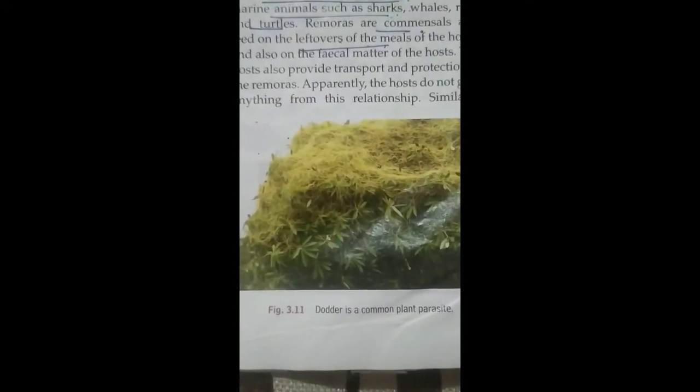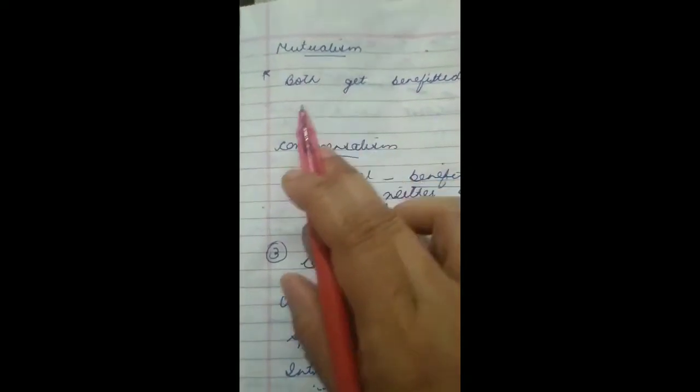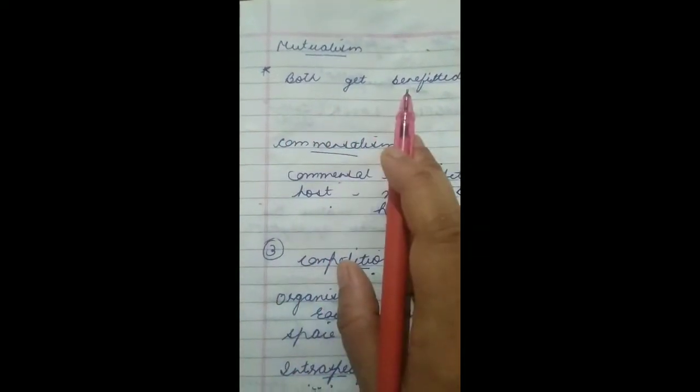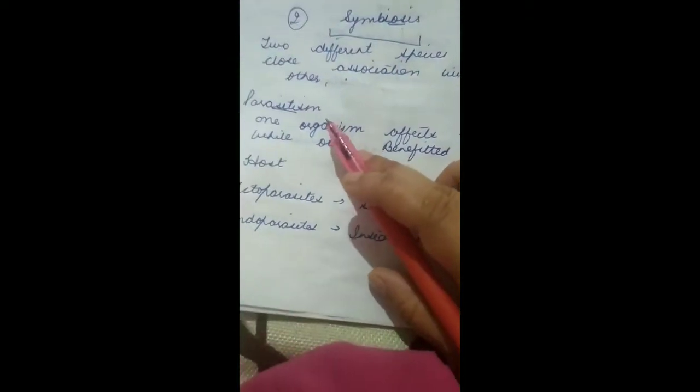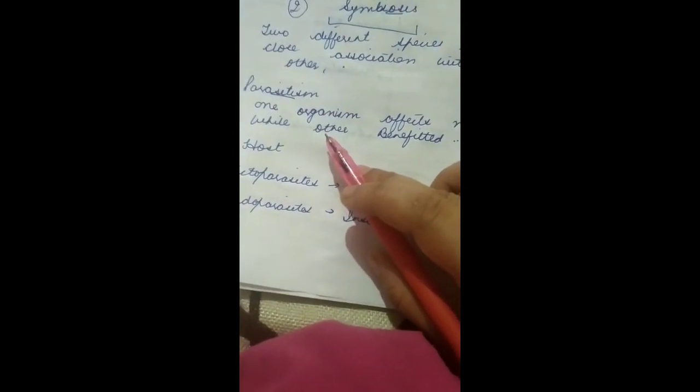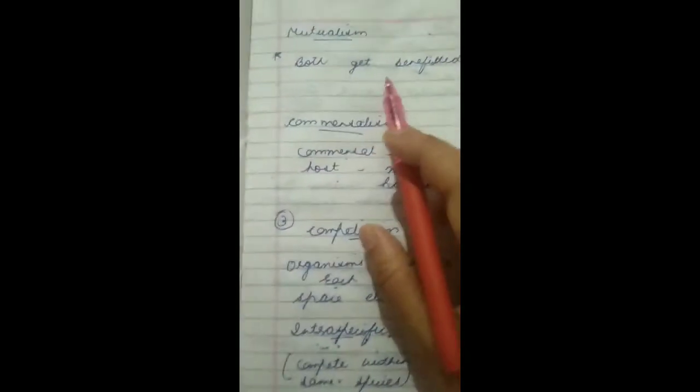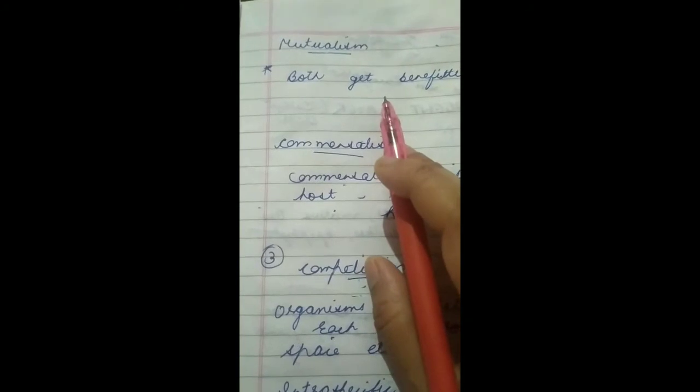Now we will discuss mutualism. In mutualism, both organisms get benefited. In parasitism, only one organism is benefited and the other is harmed. But in mutualism, both organisms are benefited.